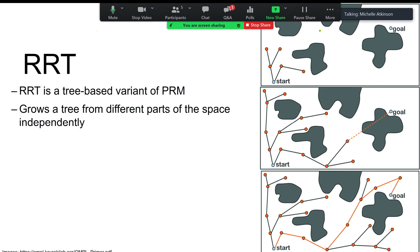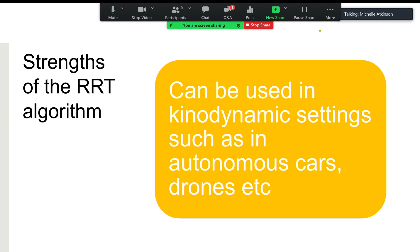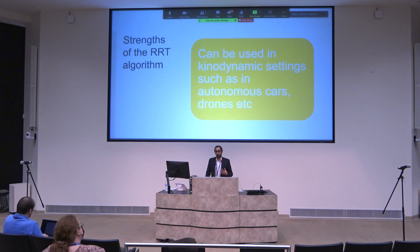For this talk, we're going to focus on a tree-based variant called the RRT algorithm. It grows a tree from different parts of the search space independently, starting from the start point and searching until the tree reaches the goal point, then backtracking to give a path. One of RRT's strengths is that unlike the PRM, it can find a valid solution within a single pass — it builds on demand. More importantly, the RRT algorithm works really well in a kinodynamic setting, making it attractive for commercial and industrial purposes.